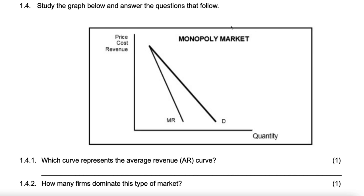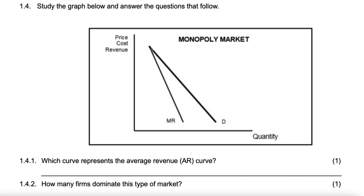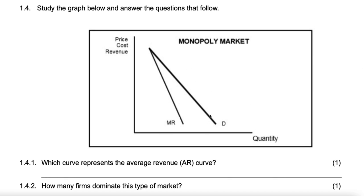If there was no heading, what would this market structure be? It would still be Monopoly, and we would know that because this particular demand curve — I wouldn't say it's highly elastic, because the one for monopolistic competition is highly elastic and would be more elastic than what you see here.